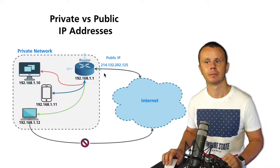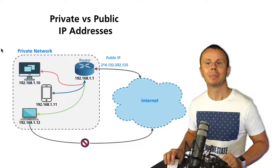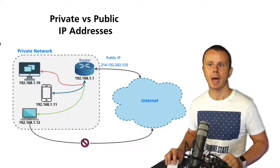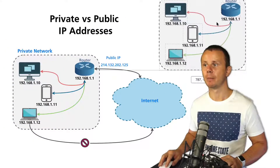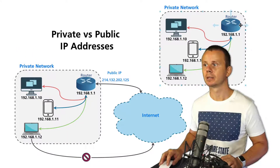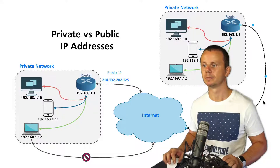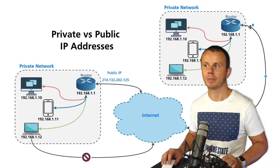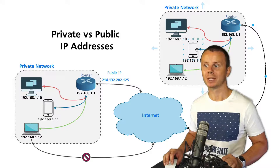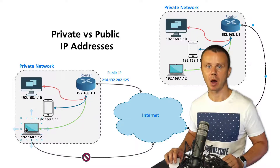IP packets are accessible if they come from the router's public IP address. Private networks may be the same in different places in the world — you could create the same network somewhere else, and that router will also be connected to the internet with another public IP address on its external interface. Hosts in that private network may have the same IP addresses as devices in this private network.